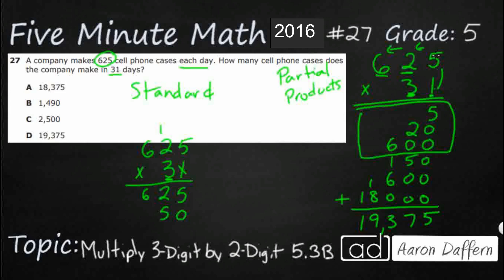So 3 times 2 is a 6. We're going to add that 1 back in there. So that's going to be a 7. And now we've got our 3 times 6. That's 18. So we only have two rows here. We've got to add them up, but we're going to get the exact same answer. 19,375.